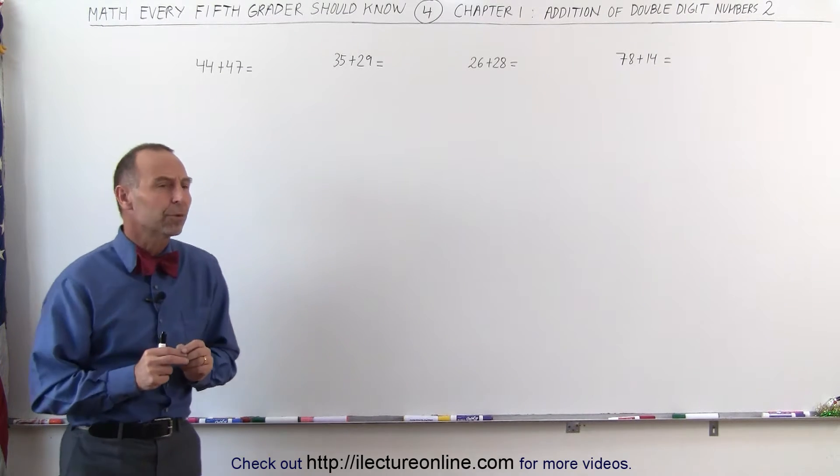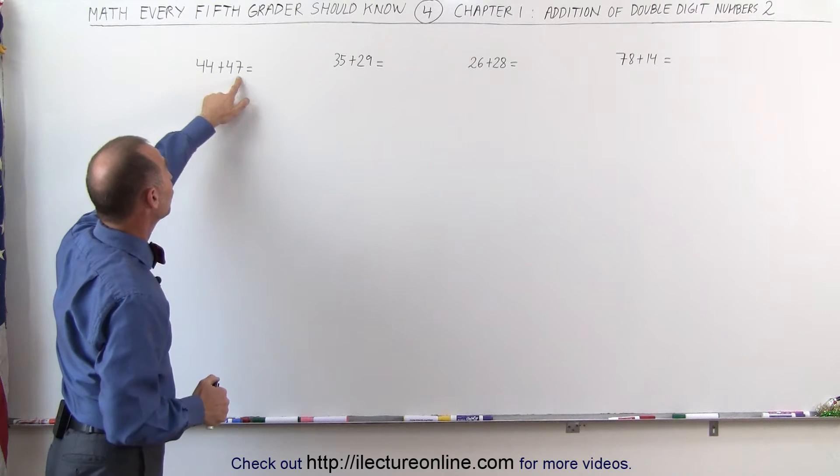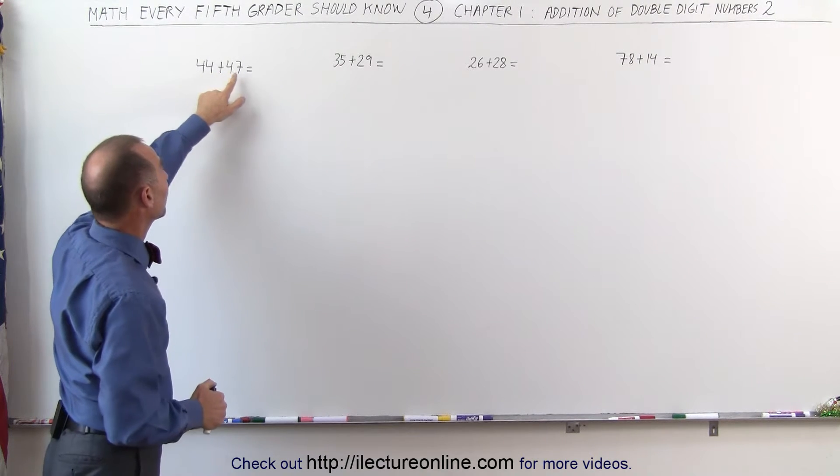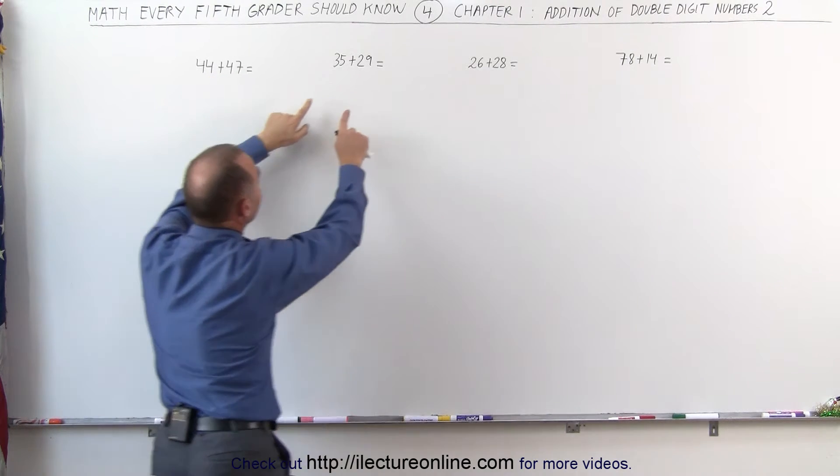We're adding double digit numbers, but in this case, what you will notice is if you look at the last two digits, the last digit here and the last digit there, when you add those together, you get a number bigger than 10.